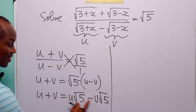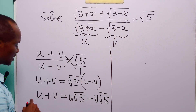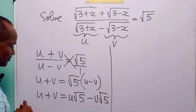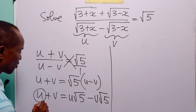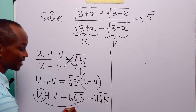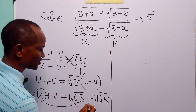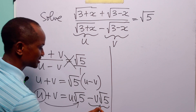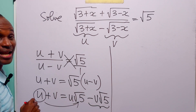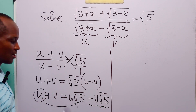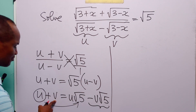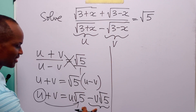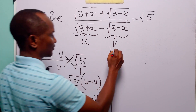Now let us rearrange this equation. We are going to take u over to the right hand side and take the v root 5 term over to the left hand side. When we do that, this equation becomes v plus v root 5 on the left.